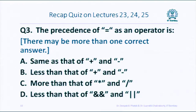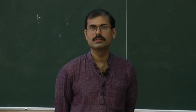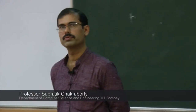The precedence of the assignment operator — which of the following is correct, and more than one may be correct. Options: same as that of plus and minus; less than that of plus and minus; more than that of star and slash (multiplication and division); and less than that of logical AND and logical OR. These are not meant to be tricky questions — they are straight from the video lectures.